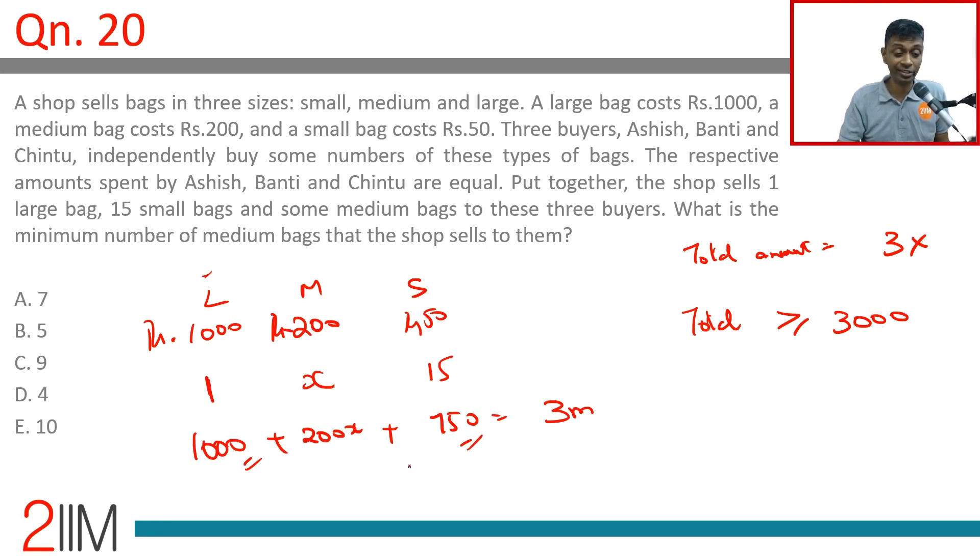So 200 times 6 is 1200. If x were 6, we'll get only 2950. So x is more than 6. Let's put x equal to 7.